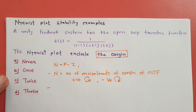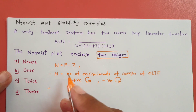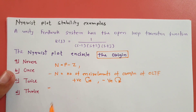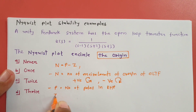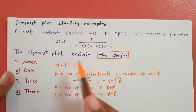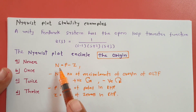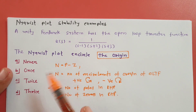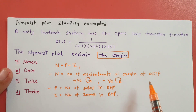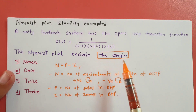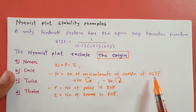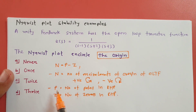For the stability case with encirclement around −1,0, N = P − Z where P is open loop poles in RHP and Z is closed loop poles in RHP. But when it comes to encirclement around the origin, P is the number of poles in RHP and Z is the number of zeros in RHP. This is an important distinction to focus on.